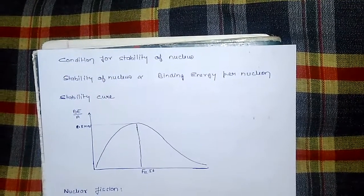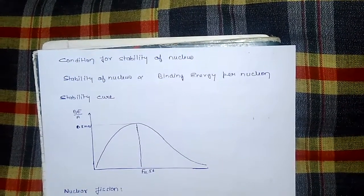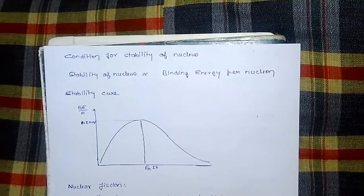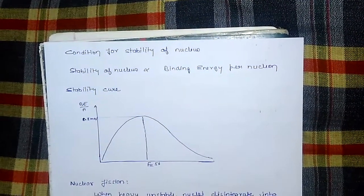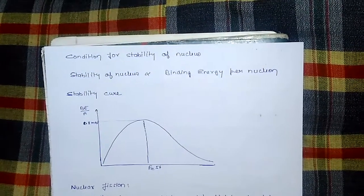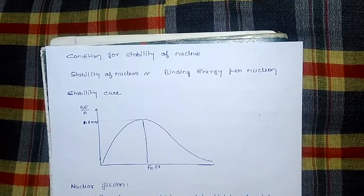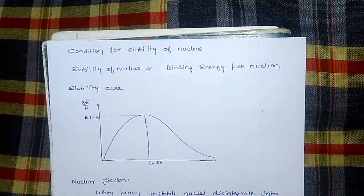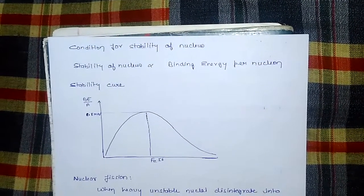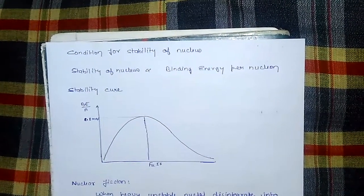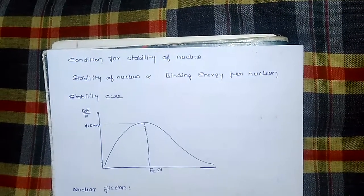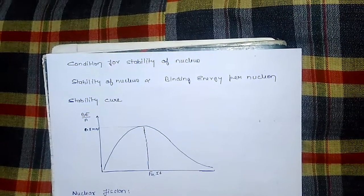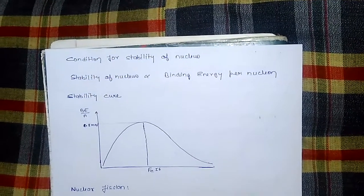Stability of nucleus is directly proportional to binding energy per nucleon. Let us discuss with the stability curve. In the y-axis it is binding energy per nucleon and in x-axis its element. Binding energy per nucleon increases up to iron Fe56. For Fe56 it is maximum, that is 8.8 mega electron volt, and then it decreases.